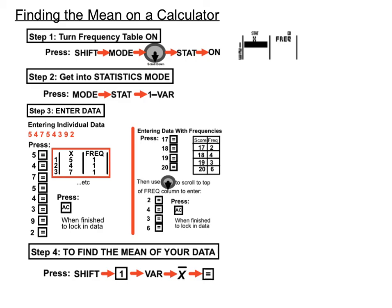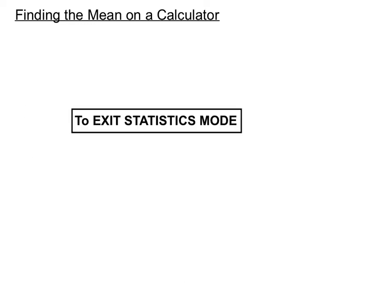A lot of students might use their stats mode and then worry they can't get their calculator back to normal. To exit stats mode and get it back to degrees mode that we usually work in, press MODE, COMP. It's usually the first option, so MODE 1 or MODE COMP will get you back into the normal mode.